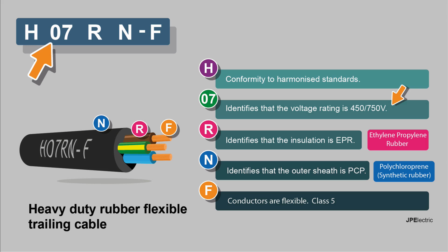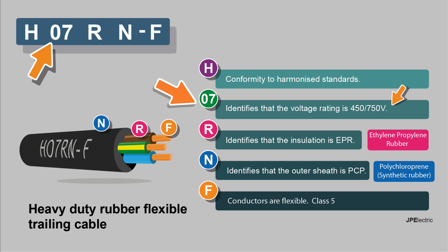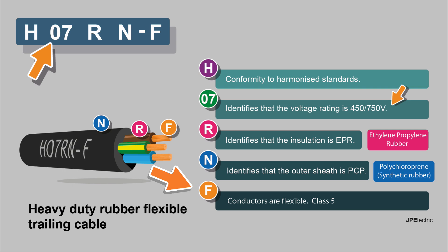So what do these numbers and letters mean? H means it conforms to harmonized standards. The 07 identifies that the voltage rating of this cable is 450–750 volts. R identifies that the insulation is EPR — ethylene propylene rubber. N identifies that the outer sheath is PCP — polychloroprene. And F tells us that the conductors are flexible class 5.